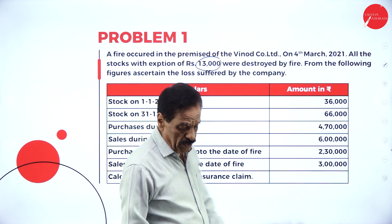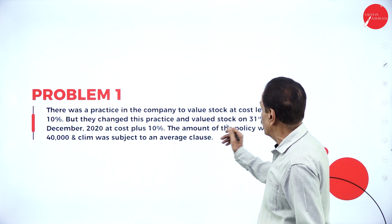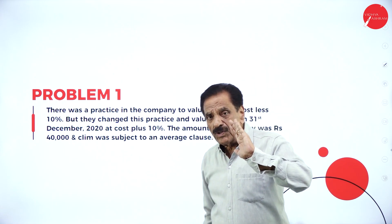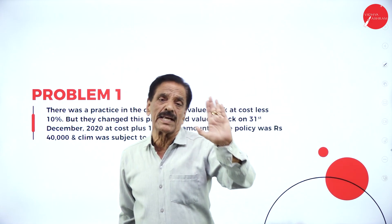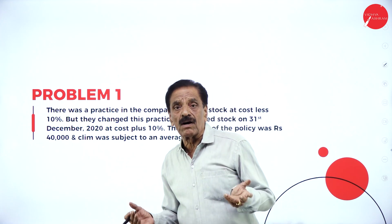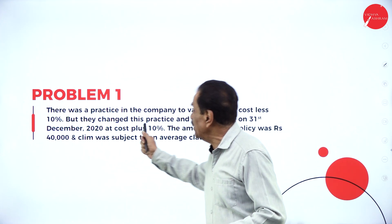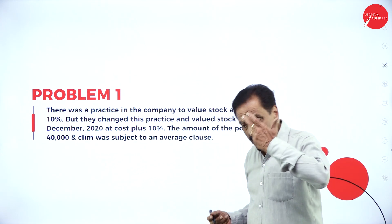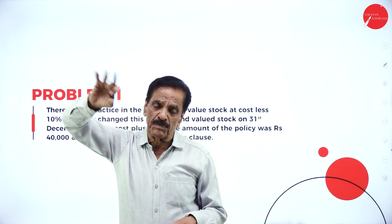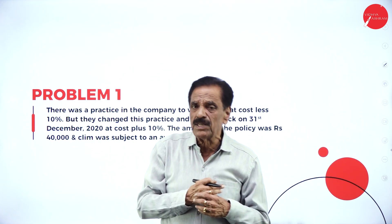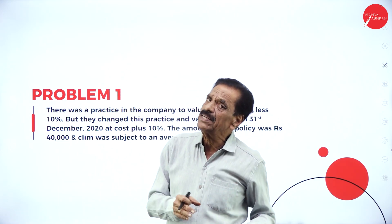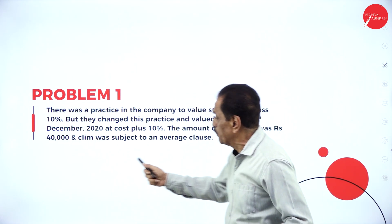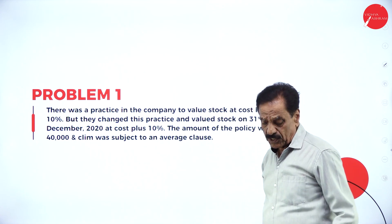Calculate the amount of insurance claim. There was a practice in the company to value the stock at cost less 10 percent — though the actual value is 100, they show only 90. The stock on 31st December 2020 was valued at cost plus 10 percent — they changed the practice, so what was 90 rupees is now shown as 100 rupees. The policy amount is Rs. 40,000 and the policy is subject to an average clause.